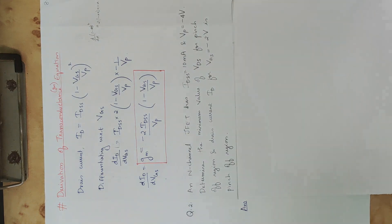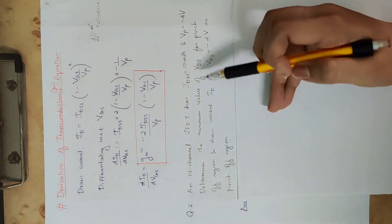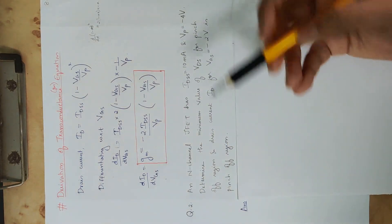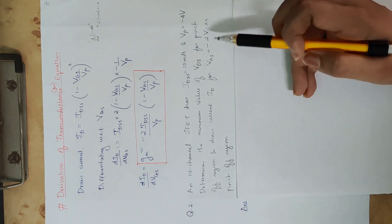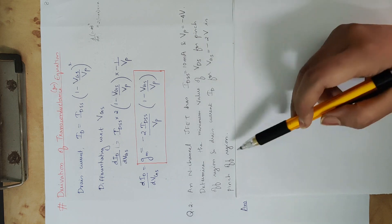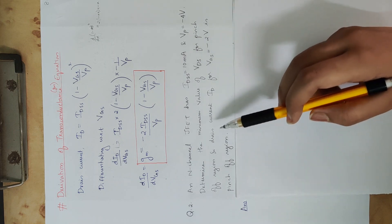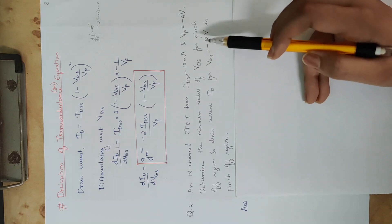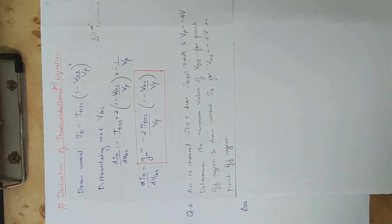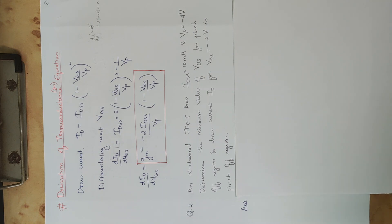Determine the minimum value of VDS for the pinch-off region, and drain current ID for VDS equal to minus 2 V in the pinch-off region. Let's look at the minimum value of VDS for the pinch-off region.